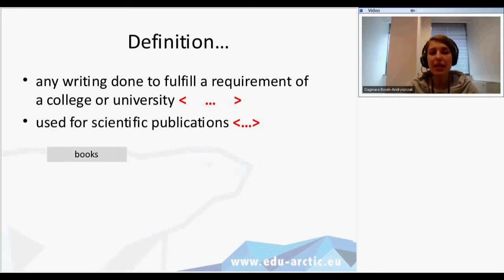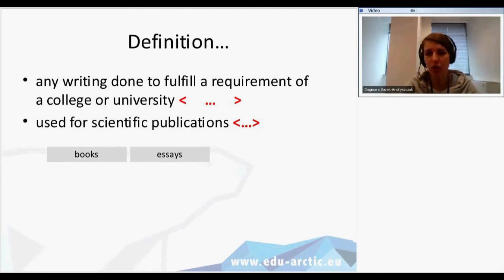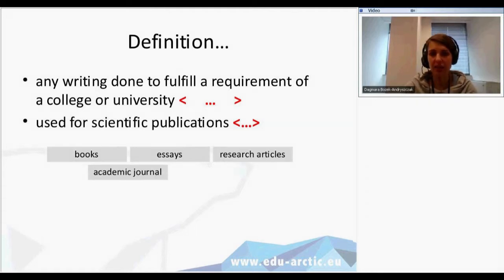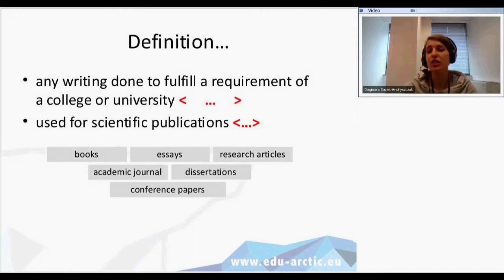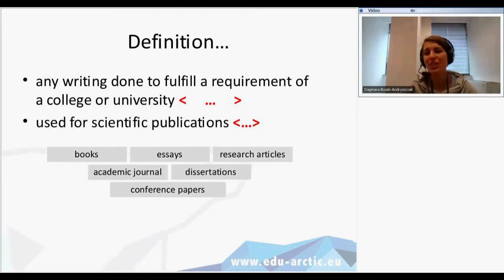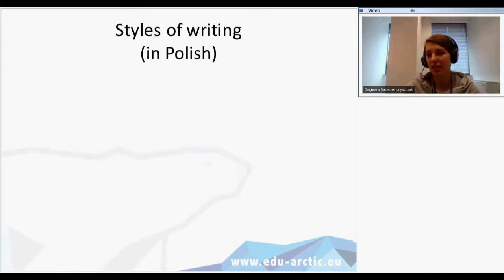What does scientific publication mean? For example, we have scientific books, essays, research articles, academic journals, dissertations, and conference papers. Of course these are only some examples, but now we know what kind of publications are written in the writing style we can call academic or scientific.